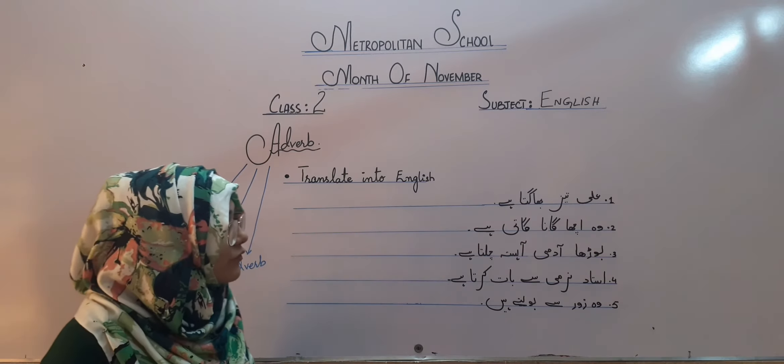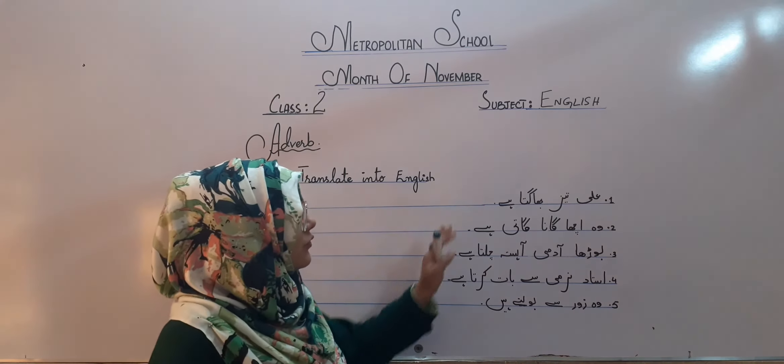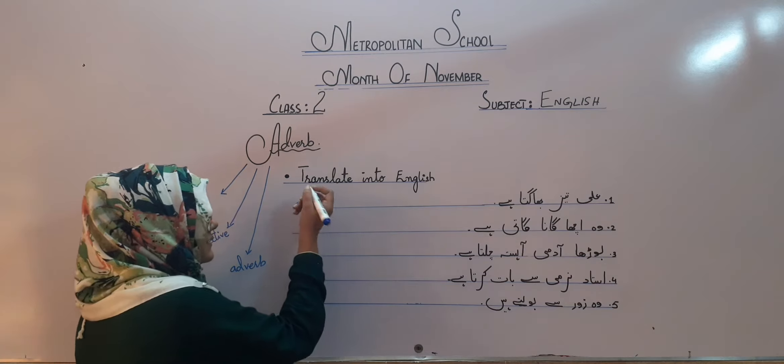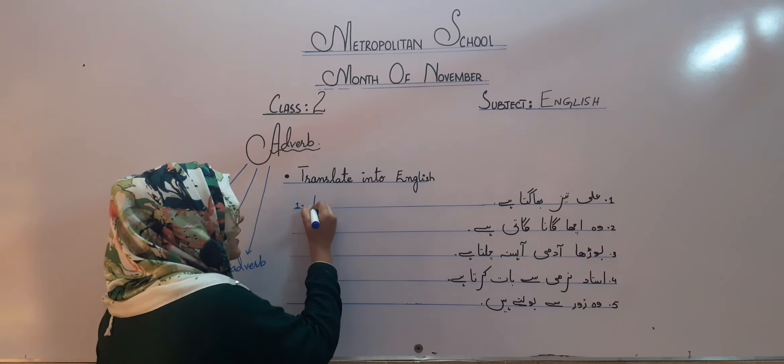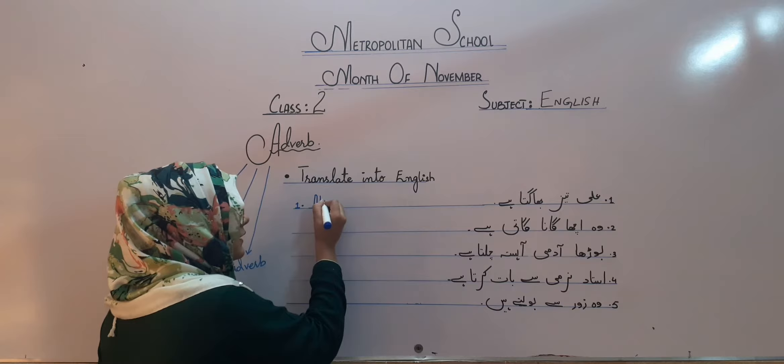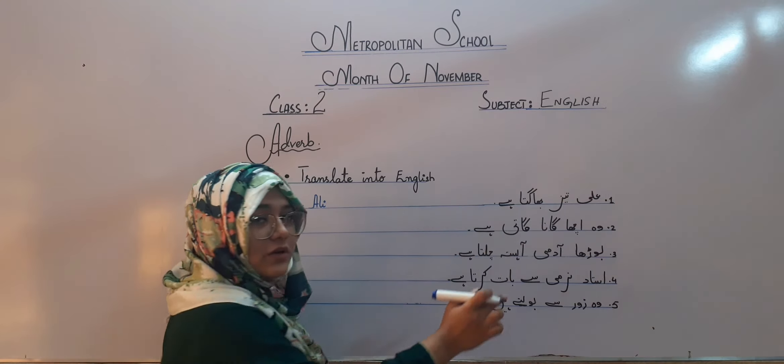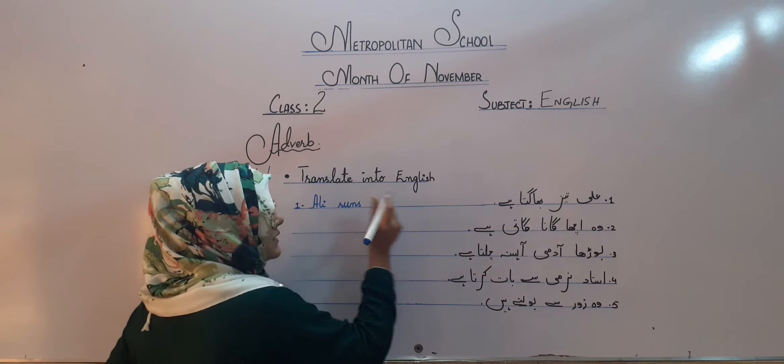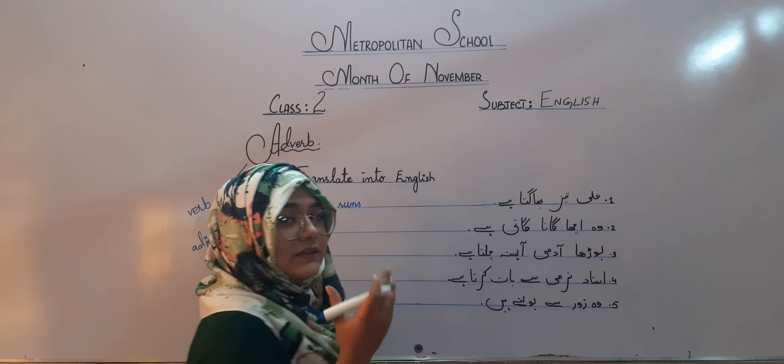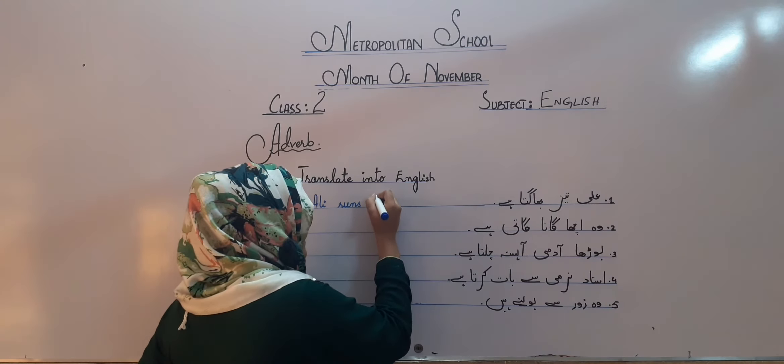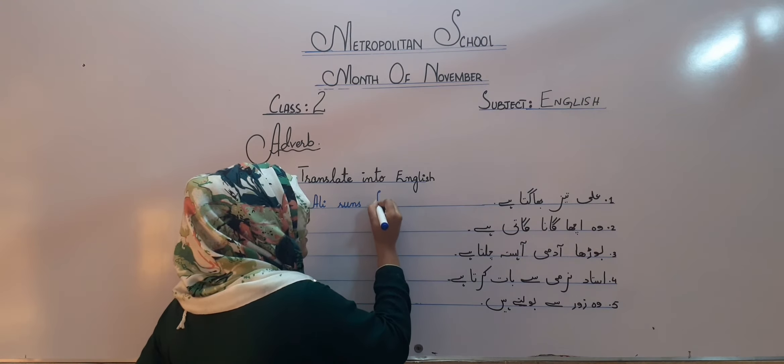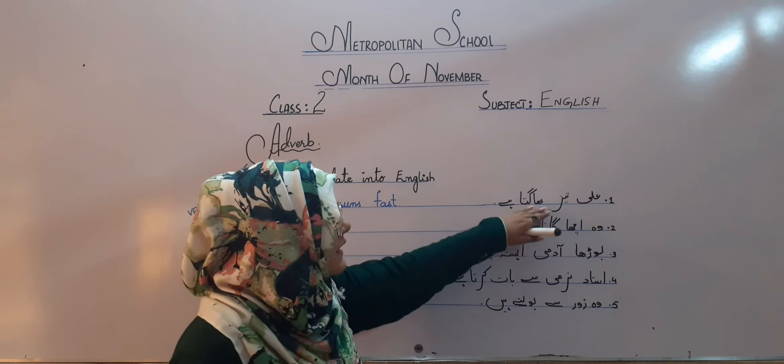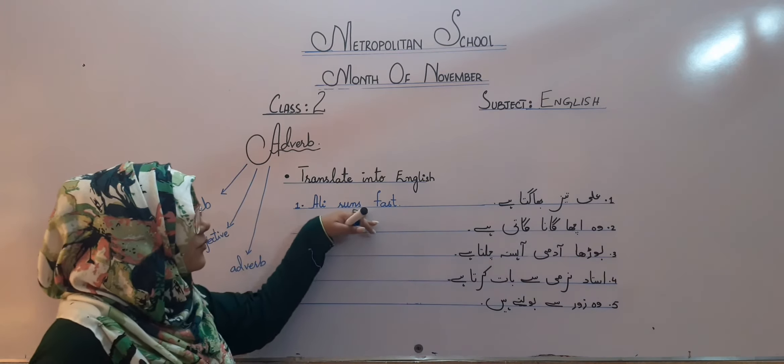So, the definition of verb is that adverbs are those words which gives another meaning, which gives the meaning, actually defines what the verb is telling, how it is and it modifies the verb, adjectives or the group of words. So, let's start with the translation of a few sentences. Here, the first one is Ali tez bhaagta hai. So, let's start with the first subject. Ali is here is the subject Ali. What is the action word over here? Run. Ali runs. So, he runs fast.